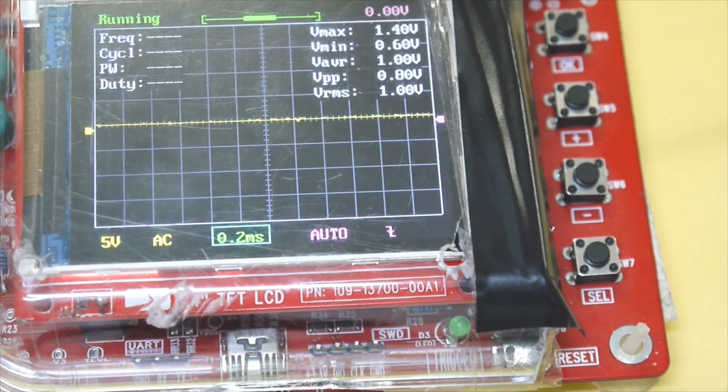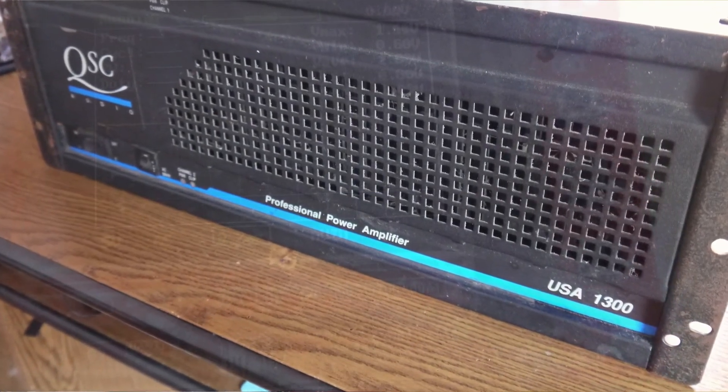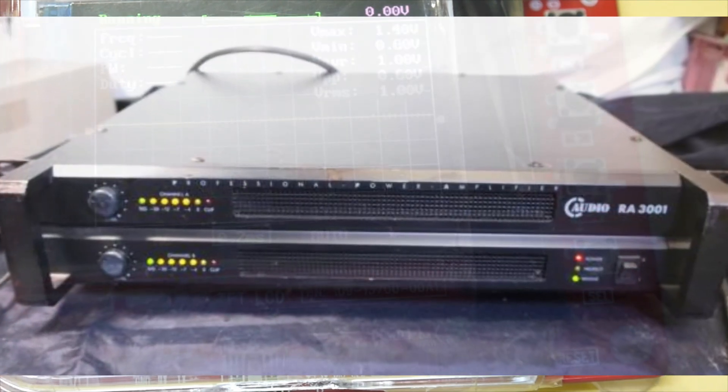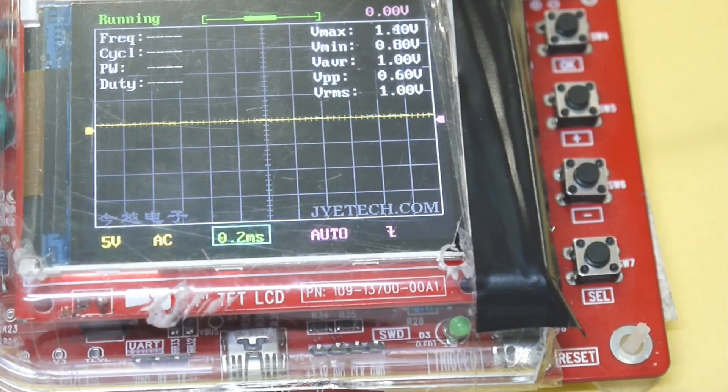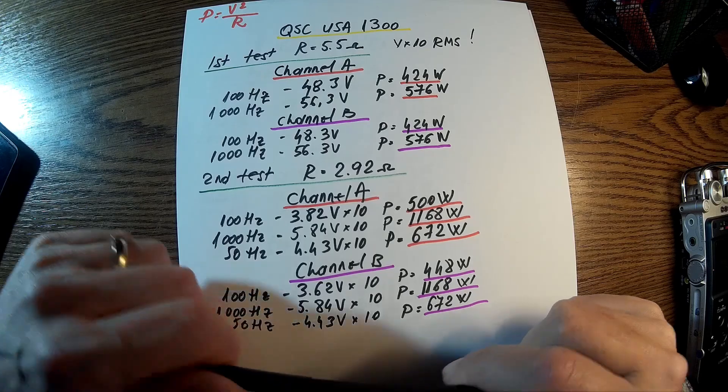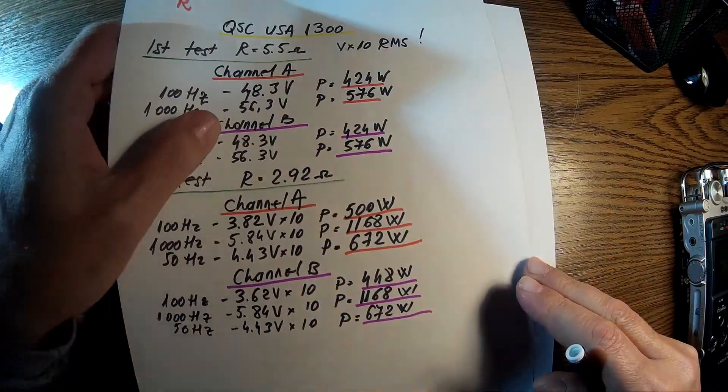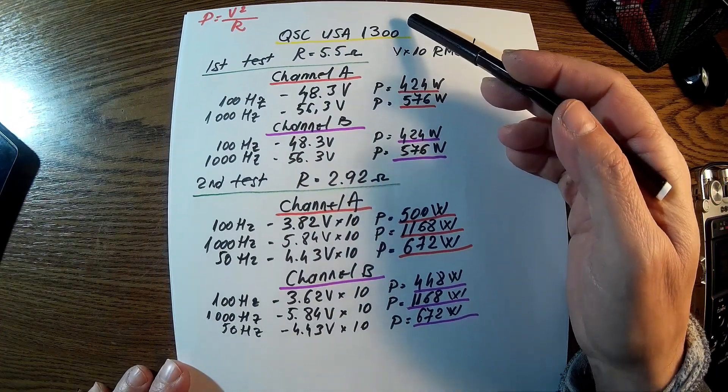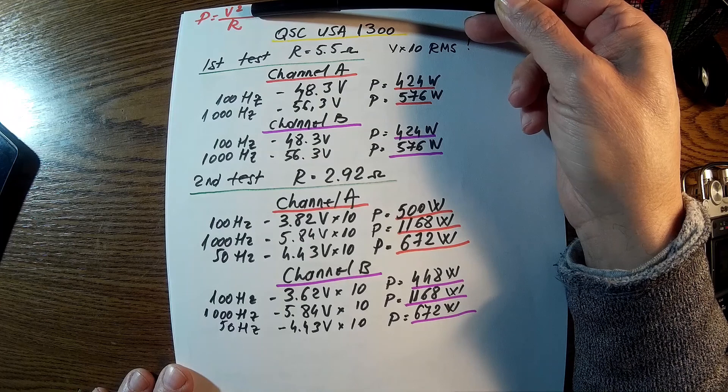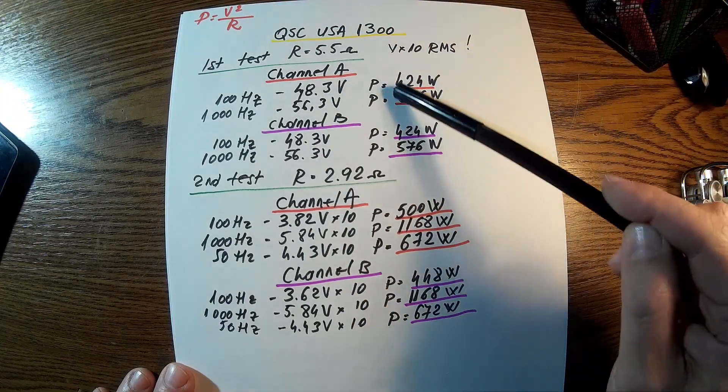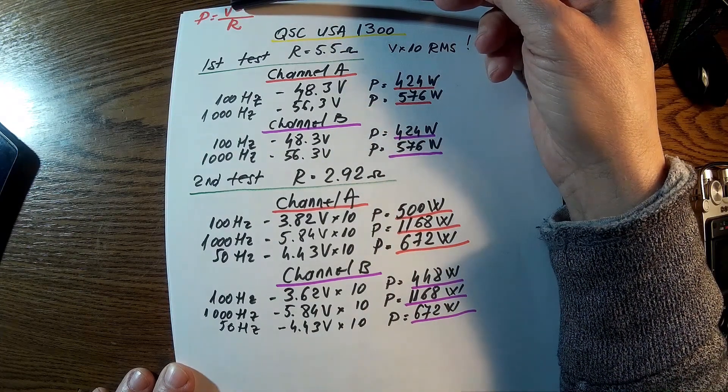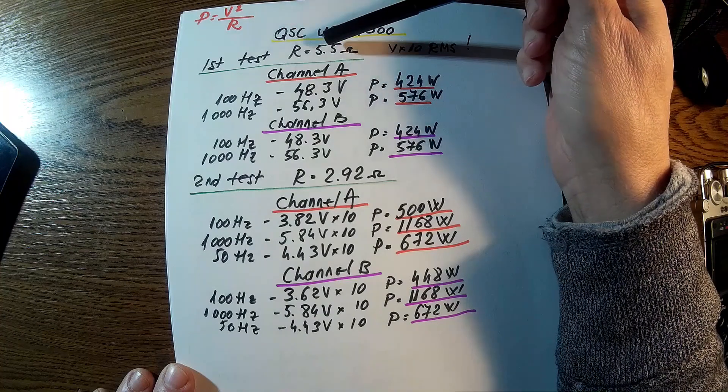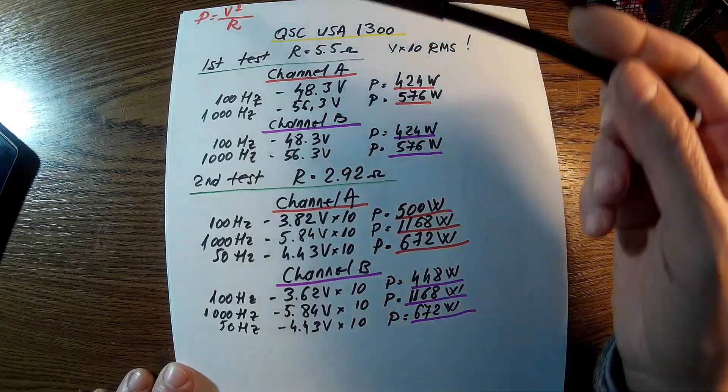QSC Professional Power Amplifier USA 1300 and the other one is C-Audio RA3001. Both of them are class AB and they behave very, very nice. Now here we have the numbers for these two power amplifiers. Let's start with QSC USA 1300. This is the formula which I'm using to calculate the power. Power is voltage squared divided by resistor.